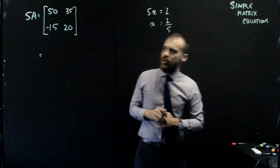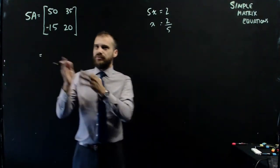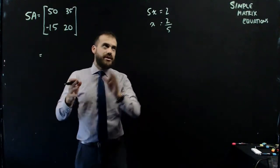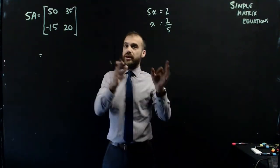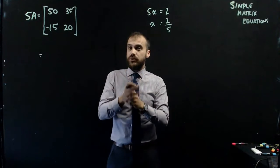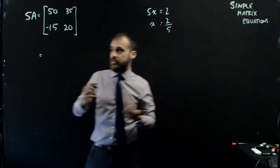We get x equals 2 fifths. We don't really have a neat way of dividing matrices. It's just really ugly. But instead of thinking about dividing by 5, we can multiply by 1 fifth. That's the same thing.